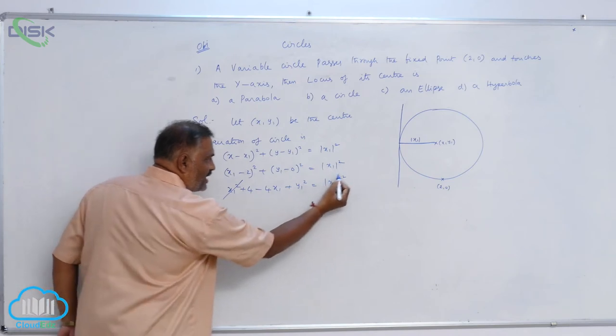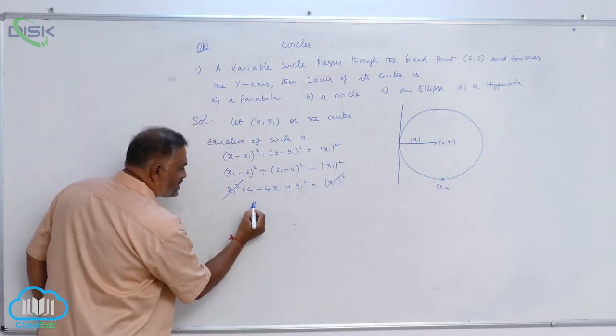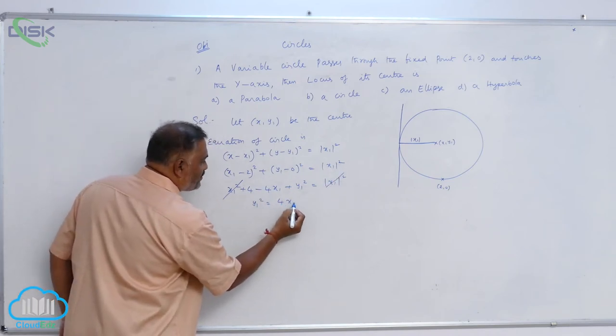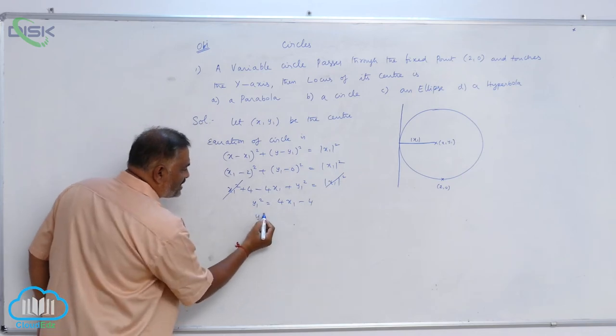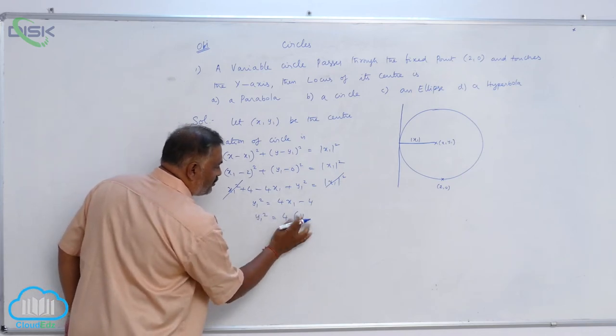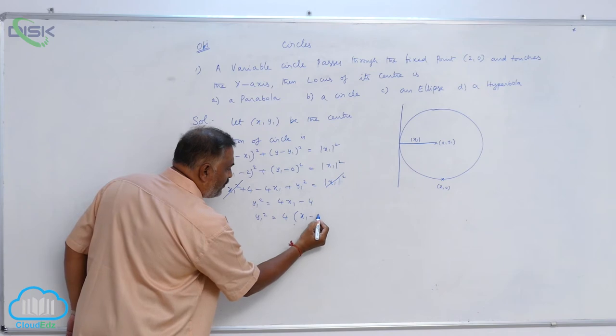So, x1² gets cancelled, y1² = 4x1 - 4, y1² = 4(x1 - 1).